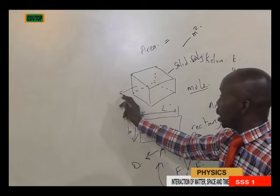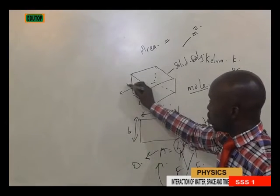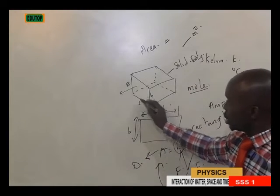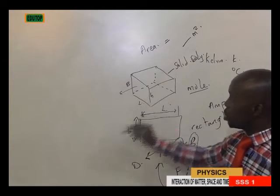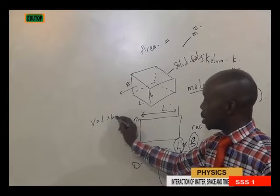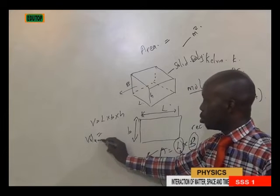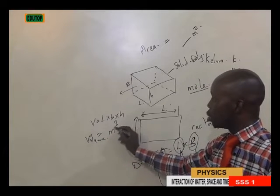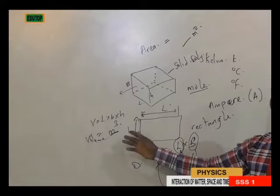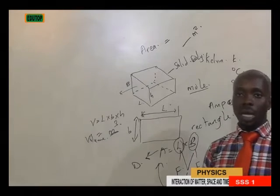This cube body I drew here has three major quantities: length, breadth, and height. So if you are to determine the volume of this body, you will be considering length times breadth times height. The SI unit for volume is meter cubed, meaning there are three different lengths — all fundamental quantities — that combine to form this derived quantity.